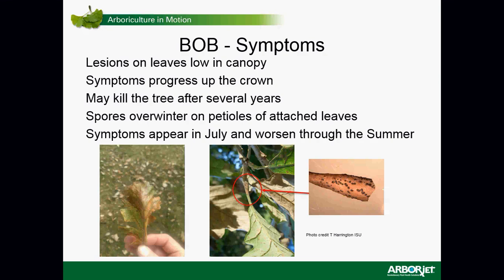Symptoms generally begin with lesions on the leaves low in the canopy. The tree may leaf out normally and green, but lesions develop from the spores throughout the summer. That can progress up the crown from year to year. More often than not, the disease doesn't kill the tree outright — it continuously stresses the tree to the point where a secondary problem occurs, such as a two-line chestnut borer attack. The big issue is also that the tree just looks terrible mid-summer.